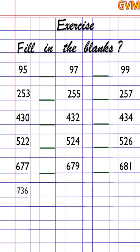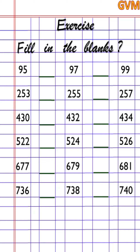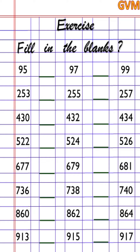Next is 736, dash, 738, again dash, 740. The second last number set is 860, 862, 864. The last number set is 913, 915, 917. So children, we have written this exercise completely. Now we will solve this exercise.